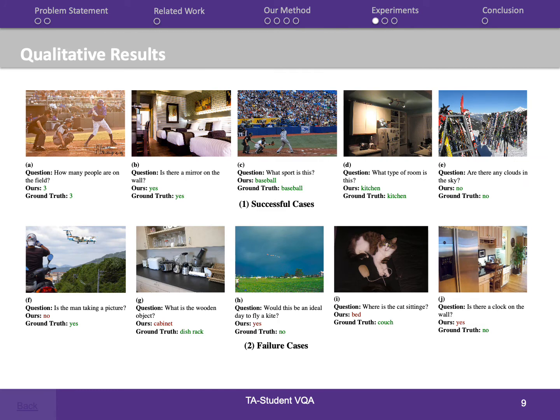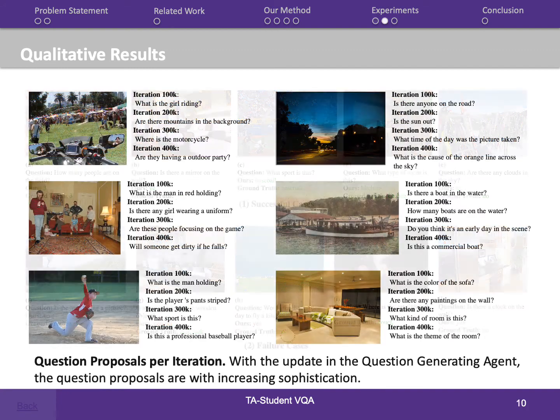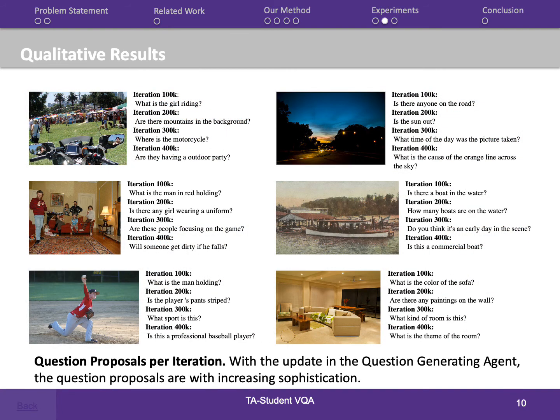Here are some qualitative results. The results indicate how our model is capable of answering questions that require multiple tasks, such as counting, finding objects, and performing reasoning. We evaluate our model in the aspect of question complexity. With different iterations, the format of the generated questions varies — from 'is there,' to 'what,' to 'how.' Additionally, the complexity and diversity increase, from simply asking about object attributes, to counting, and then doing reasoning.